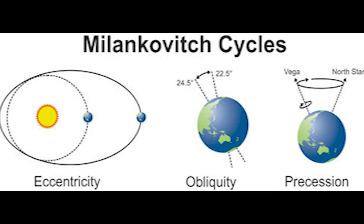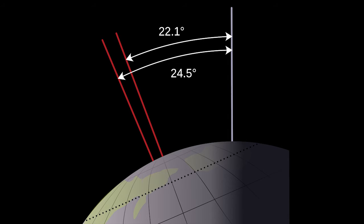Obliquity, which is the tilt of earth's axis towards and away from the sun. And precession, which is the wobble of earth's axis towards and away from the sun. The axis tilt, or obliquity, varies relative to the plane of earth's orbit. The tilt, typically around 23.5 degrees, can vary between 22 and 24.5 degrees — meaning it can change up to 2.5 degrees over a period of 41,000 years.